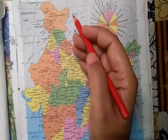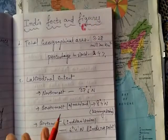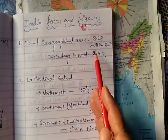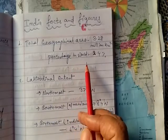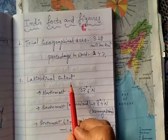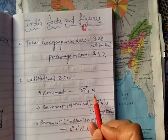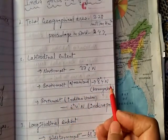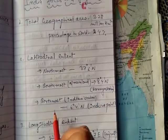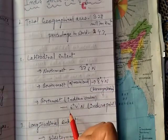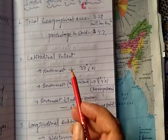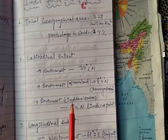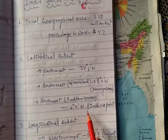Total geographical area of India: 3.28 million square kilometers, which is 2.4 percent of the world. Latitudinal extent — northernmost point: 37 degrees 6 minutes north; southernmost point of mainland: 8 degrees 4 minutes north touching Kanyakumari. The southernmost latitude of the Indian Union — which includes the mainland and the two island groups, Andaman & Nicobar and Lakshadweep — is 6 degrees 4 minutes north, touching Indira Point.